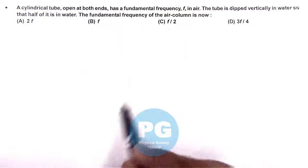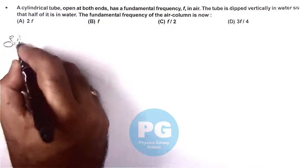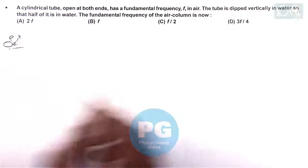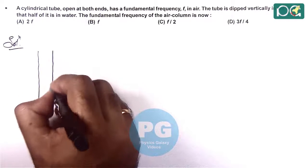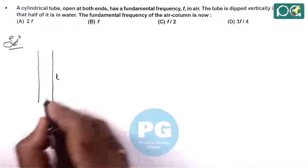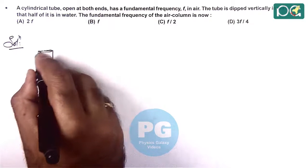Now it is asking the fundamental frequency of air column. Here in solution we can see, we visualize the case. We are given first with a cylindrical tube, say it is of length L, which is open at both ends.